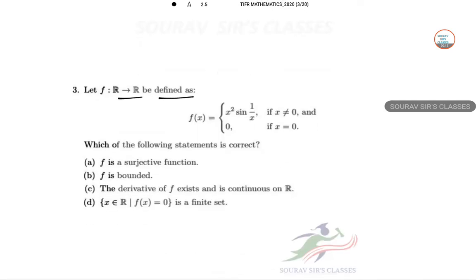F of R to R defined as Fx equal to x square sine 1 by x, and which of the following statement is correct. So R to R defined in this way. F is not bounded, that is for sure directly. So option B is incorrect from this.